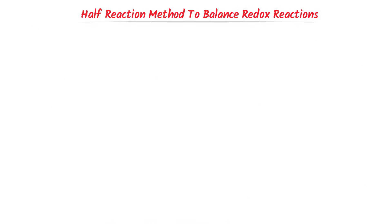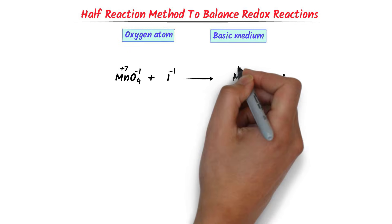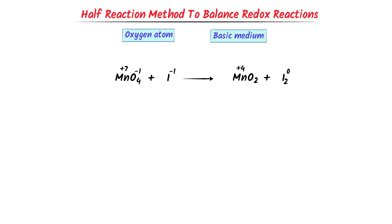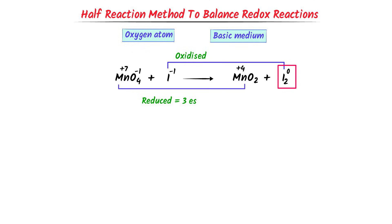Now I will teach you balancing redox reactions in basic medium by half-reaction method. Remember: firstly I will balance it in acidic medium, then convert to basic medium. Consider this reaction. The oxidation state of manganese in MnO4⁻ is positive 7; in MnO2 it is positive 4; and that of iodine is 0 in its free state. The oxidation state of manganese decreases from positive 7 to positive 4 — hence it is reduced and gains 3 electrons. The oxidation state of iodine increases from negative 1 to 0 — hence it is oxidized. In the product there are 2 iodine atoms (1 molecule of I2), so this iodine will lose 2 electrons to form 1 iodine molecule.